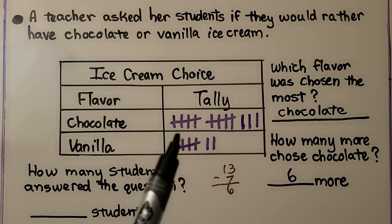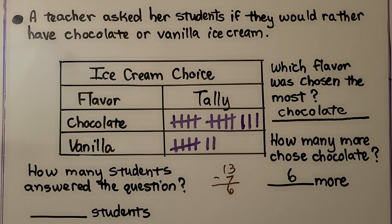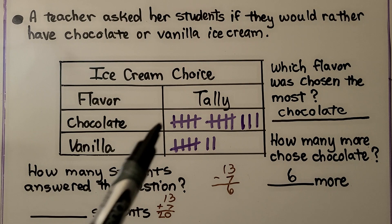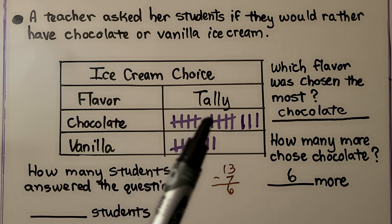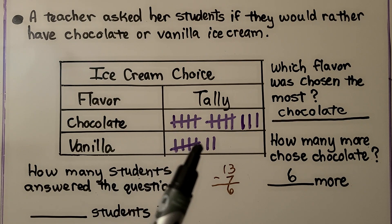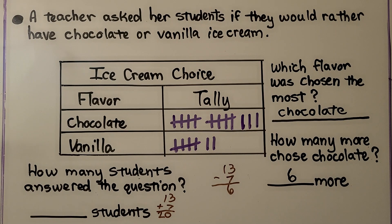We count the chocolate and the vanilla to know how many in all. We have 13 plus 7, which is 20. We know 20 students answered the question. We can even count all the tally marks: 5, 10, 15, 16, 17, 18, 19, 20 — just count all the tally marks and we know how many answered the question.